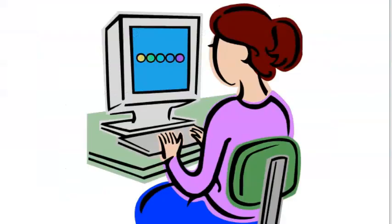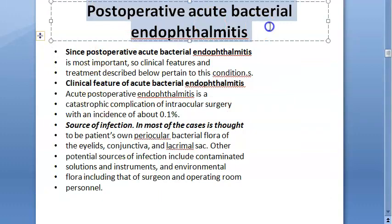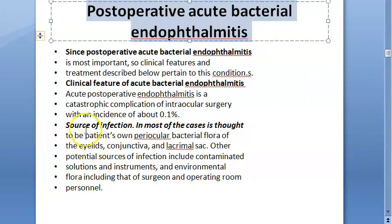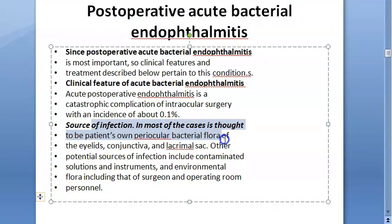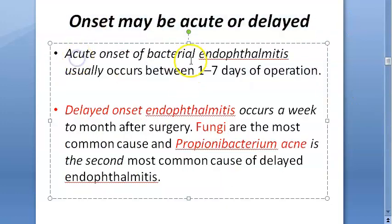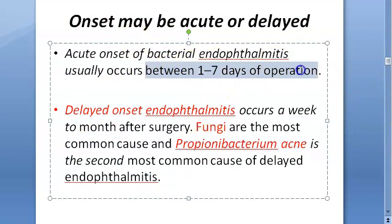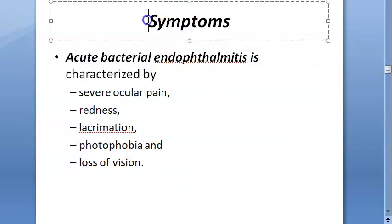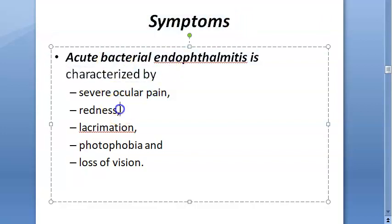Post-operative acute bacterial endophthalmitis is very important. The source of infection is the patient's own bacteria or contaminated instruments. Onset is acute (one to seven days post-operation) for Staphylococcus, while delayed onset is associated with fungi and Propionibacterium acnes. Symptoms include severe pain, redness, lacrimation, photophobia, and loss of vision.